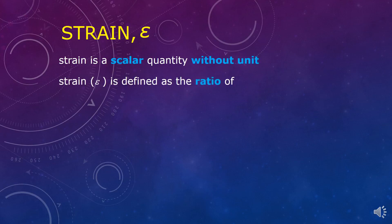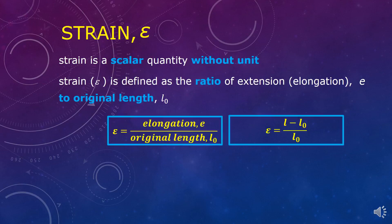Strain is defined as the ratio of extension or elongation to original length. Epsilon equals elongation over original length.